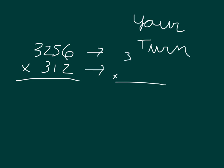3,256 would round to 3,300. 312 would round to 300. Since we're dealing with hundreds as that second factor, we can place two zeros, and then 3 times 0 is 0, 3 times 0 is 0, 3 times 3 is 9, and 3 times 3 is 9 again. So we get 990,000 as our estimated product.